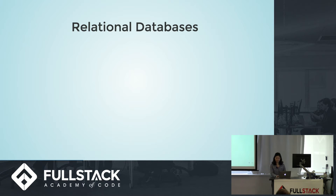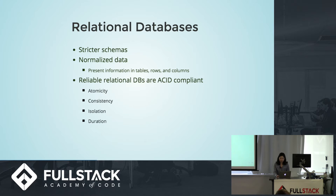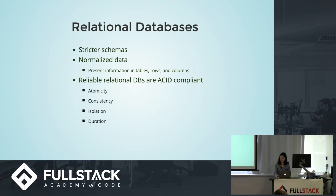Relational database management systems are organized with defined, structured schemas. Normalization of data is the process of storing data in columns and tables to minimize redundancy. Reliable relational databases are ACID compliant. Atomicity means modifications follow an all-or-nothing rule. Consistency means only valid data is written to the database. Isolation requires that multiple simultaneous transactions do not impact each other's execution. And durability ensures that any transactions committed to the database are not lost.